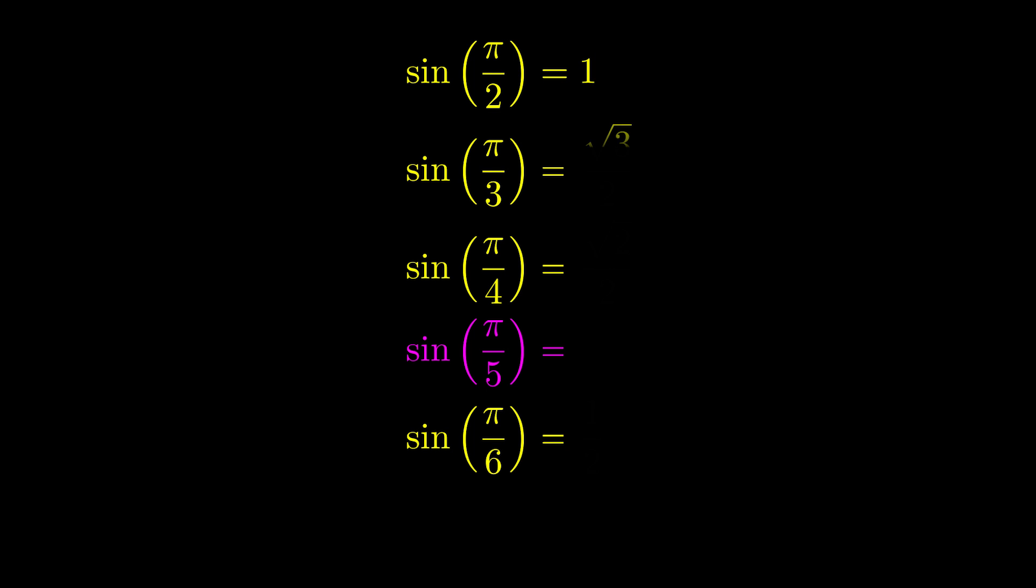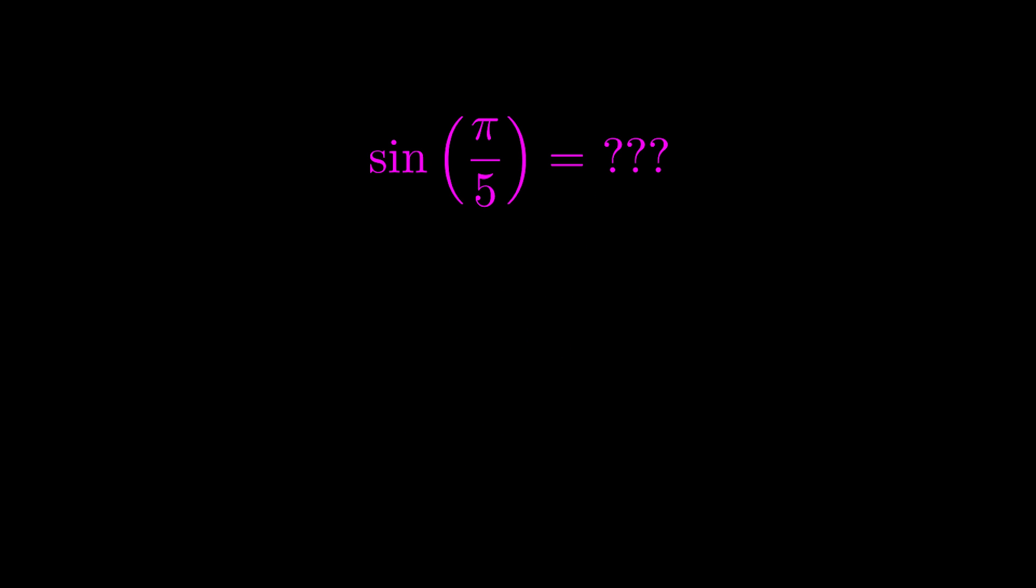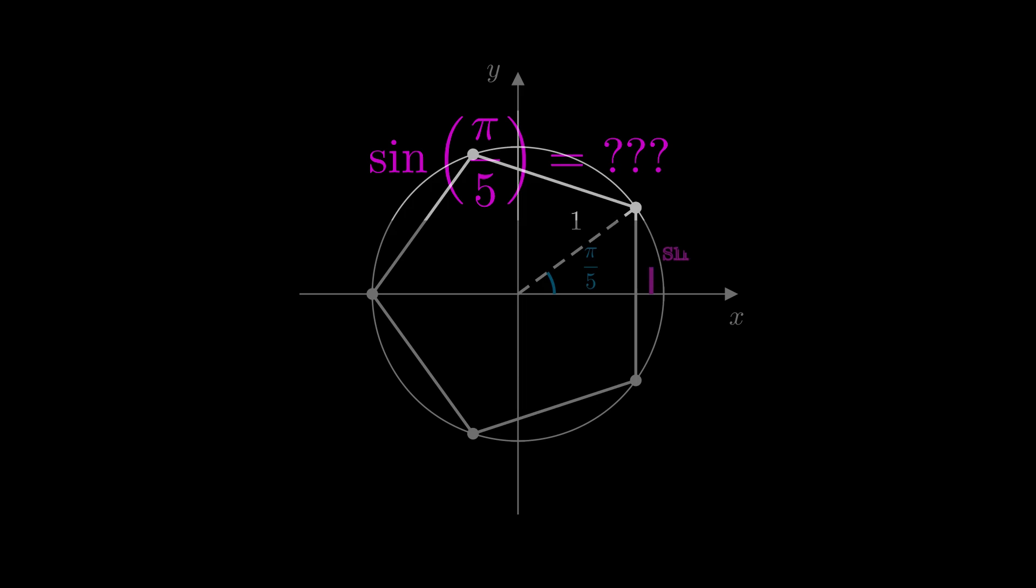You might have learned exact values for sine of π/2, π/3, π/4, and π/6, but did you ever wonder why they skip π/5? It does have an exact value and I'll show how to find it in this video.